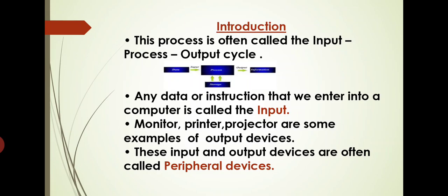So any data or instruction that we enter into a computer is input. Monitor, printer, projector are some examples of output devices. It means we can see the results of those processed data which we have entered into the computer on monitor screen, printed on pages through printer, projector on the screen. These input and output devices are often called peripheral devices.